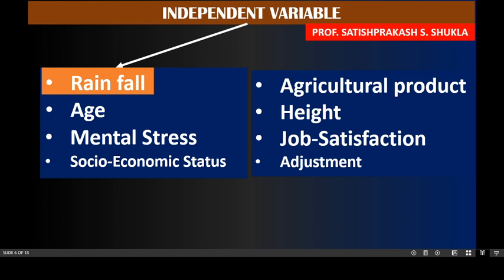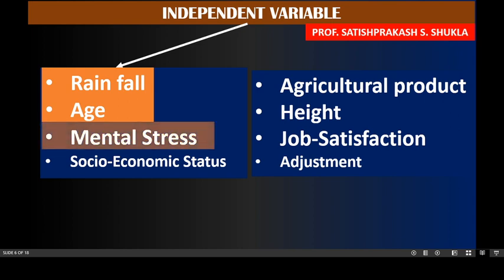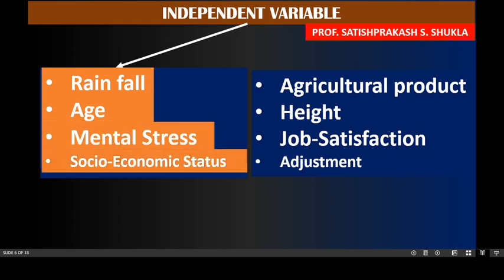In the second example, the two variables are age and height. Age is an independent variable because as the age of a person increases, height also increases up to a certain level. In the third example, the two variables are mental stress and job satisfaction. Mental stress affects the job satisfaction of the person, so mental stress is the independent variable.